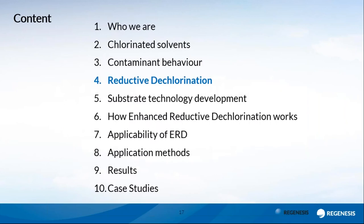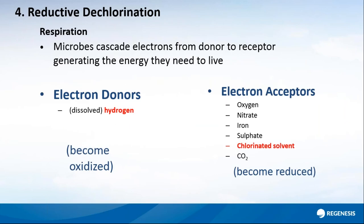Reductive dechlorination is a respiration reaction. Microbes cascade electrons from an electron donor to an electron acceptor, generating energy they need to live. Aerobic respiration is exactly the same concept: you eat food as the donor, breathe oxygen as the electron acceptor, enzymes react and energy is released. Here we have an anaerobic version — we add hydrogen as the electron donor. On the other side are electron acceptors, including chlorinated solvents. Chlorinated solvents are placed quite low on the list because they yield relatively less energy per reaction.